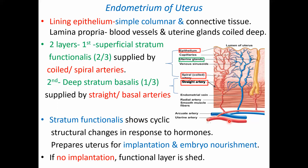The uterus is supplied by the uterine artery, which gives the arcuate artery. The deep stratum basalis is one-third of the endometrium, where blood vessels are straight or basal arteries. In the superficial stratum functionalis — about two-thirds — the blood vessels become more coiled, hence called coiled or spiral arteries. Uterine glands are straight in the superficial surface but more coiled in the deep surface.